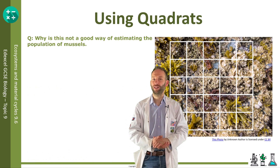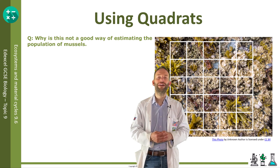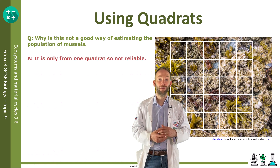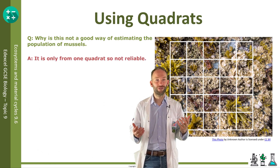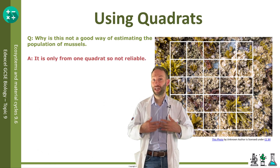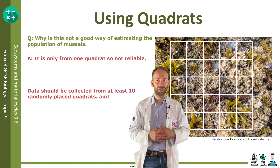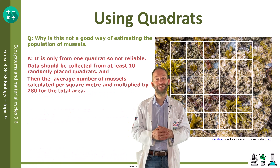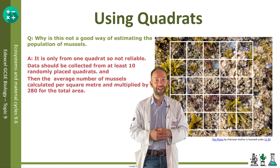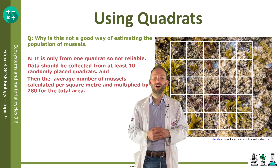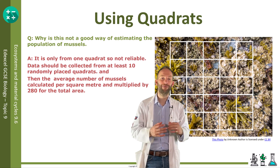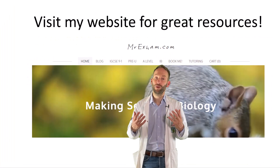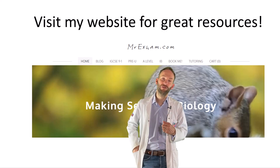Here's an evaluation question: why is that not a good way of estimating the population of mussels? Firstly, it's only one quadrat, so it's not reliable data. Reliable data is about how many repeats you do. Data should be collected from at least 10 randomly placed quadrats, and then the average number of mussels can be calculated per square metre and multiplied by 280 for the total area, which will give a much more accurate result.